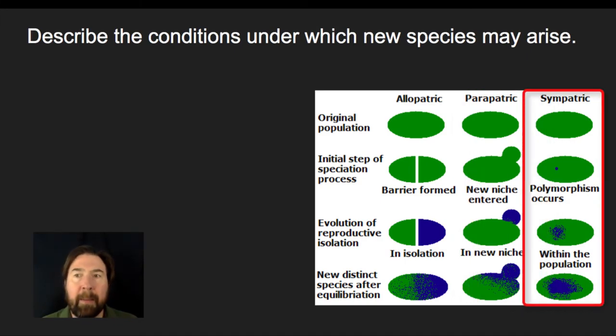And then the last case we have is sympatric speciation. Sim is going to mean same. And again, patric is going to be homeland. So within the same homeland, some sort of reproductive barrier is going to prevent those individuals from mating and reproducing.